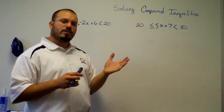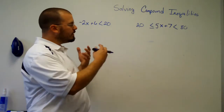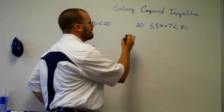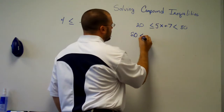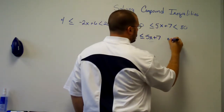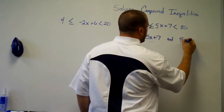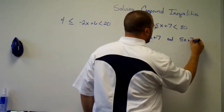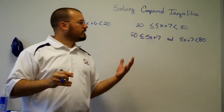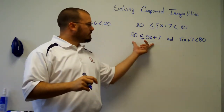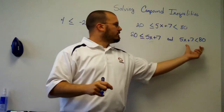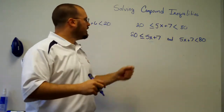There are two ways I'm going to show you to solve this. The first one is to split the inequality into the two inequalities I just mentioned. Now that I've got it split into these two inequalities, it's just solving a multi-step inequality problem, and I just do it twice.